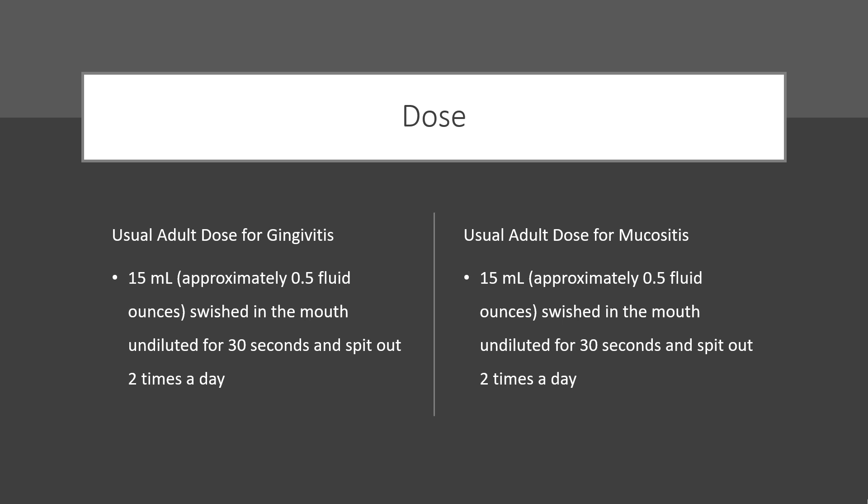Usual adult dose for mucositis: 15 milliliters (approximately 0.5 fluid ounces), swished in the mouth undiluted for 30 seconds, and spit out 2 times a day.